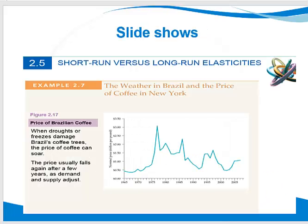In terms of the slideshows, I've provided a screenshot of some examples. In this case it's short-run versus long-run elasticity. In microeconomics, it's about the weather in Brazil and how it affects the price of coffee in New York over the longer run.